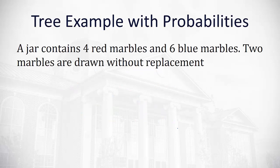Trees also help us with probabilities, combining with the multiplication rule. Let's take a look at how that works. We have a jar with four red marbles and six blue marbles. You're going to draw two marbles out without replacement. So on the first draw, there's two possibilities that we could get. We could get a red marble, or we could get a blue marble.